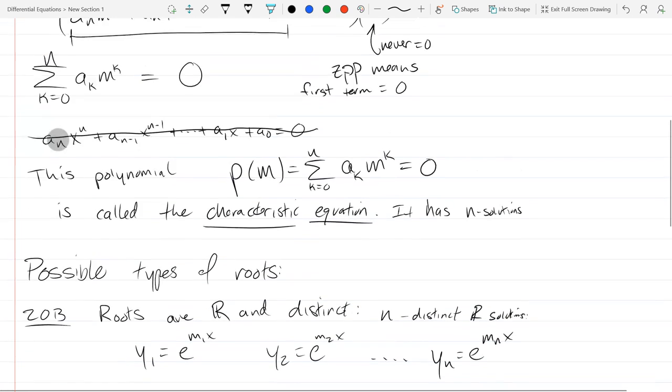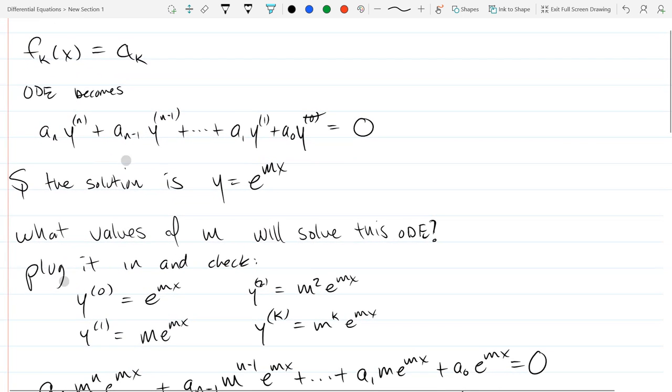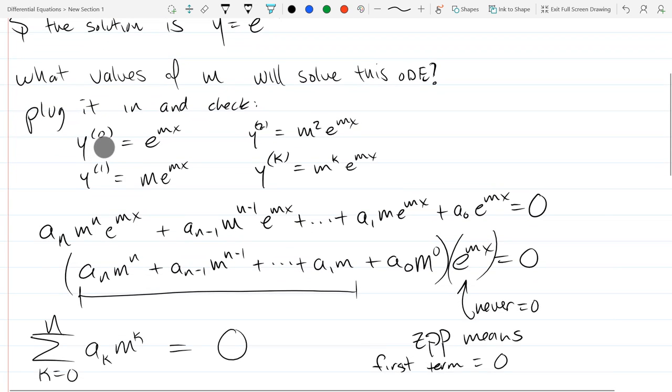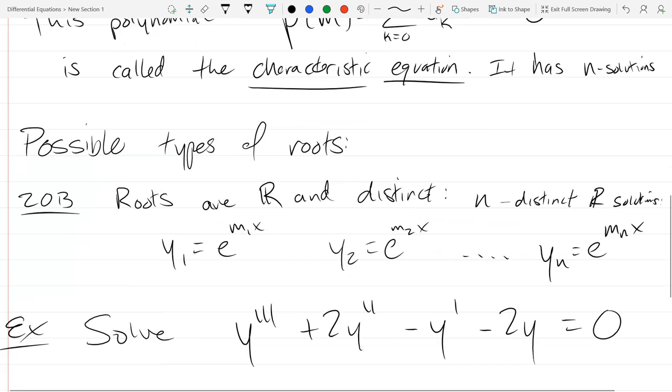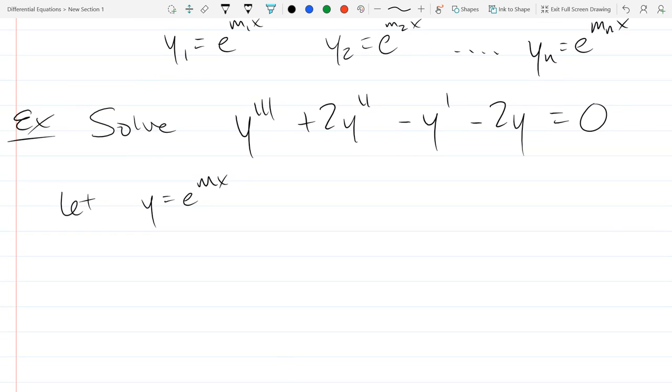All right. So we're going to solve it. So we're going to suppose all of our solutions look like e to different m values. So first thing, let y equal e to the mx. We're going to need to find some different m values. And you need to find y prime, y double prime, y triple prime. Plug in, factor, solve your characteristic. Maybe I'll do the first few steps.